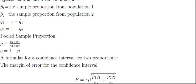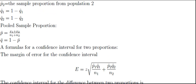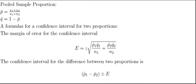But anyhow, yeah, that's how you get q-hat 1 or q-hat 2. You just take the sample proportion and subtract it from 1.